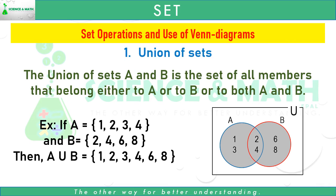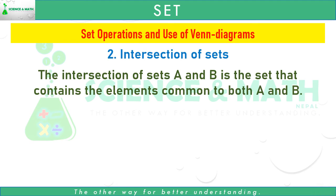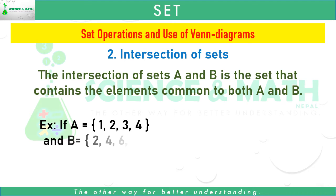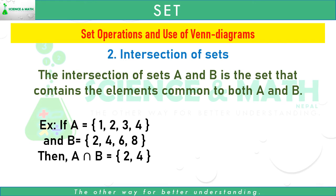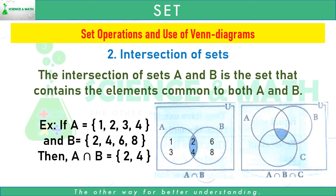Diagrammatically, the shaded region represents A union B in a Venn diagram. Number two: intersection of sets. The intersection of sets A and B is the set that contains the elements common to both A and B. For example, if A equals the set of 1, 2, 3, 4 and B equals the set of 2, 4, 6, 8, then A intersection B equals {2, 4}. The shaded region represents A intersection B. If there are 3 sets A, B and C, the shaded part represents A intersection B intersection C — the elements present in A, B and C as well.